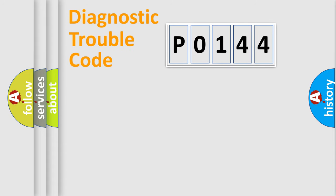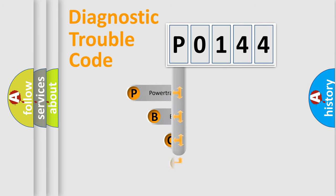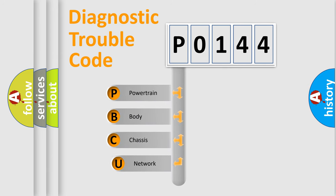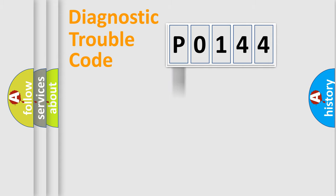Let's do this. First, let's look at the history of diagnostic fault code composition according to the OBD2 protocol, which is unified for all automakers since 2000. We divide the electric system of an automobile into four basic units: powertrain, body, chassis, and network.